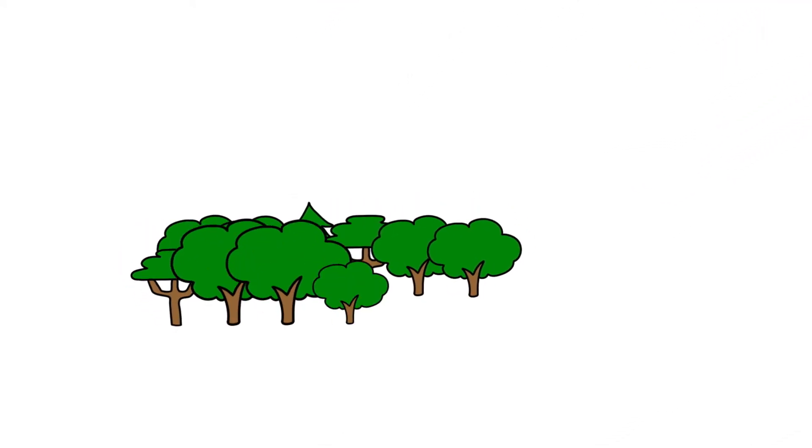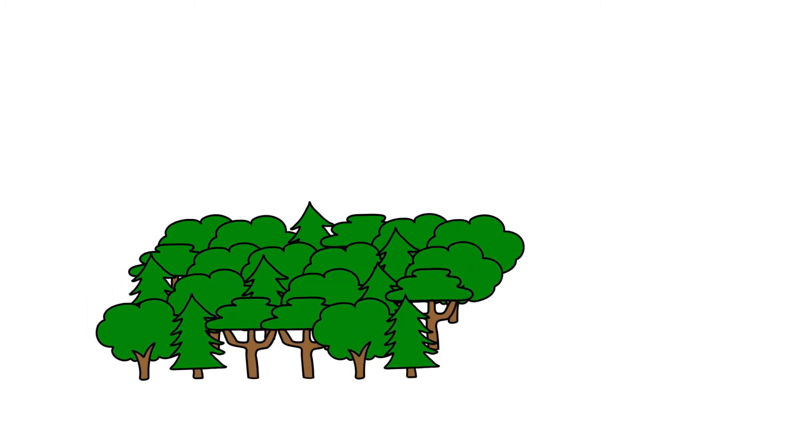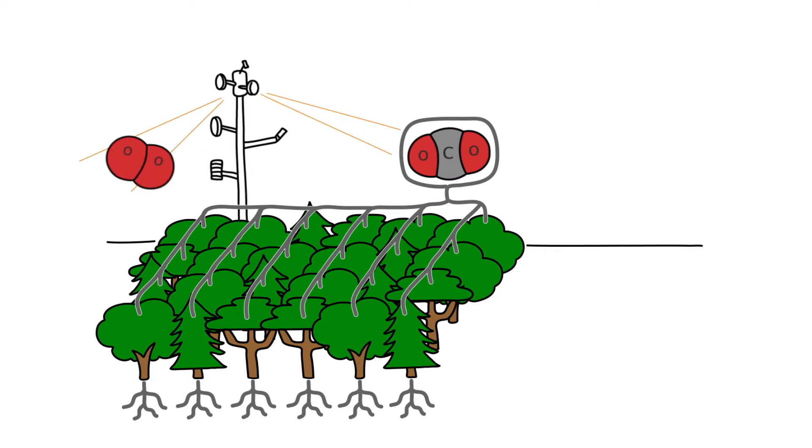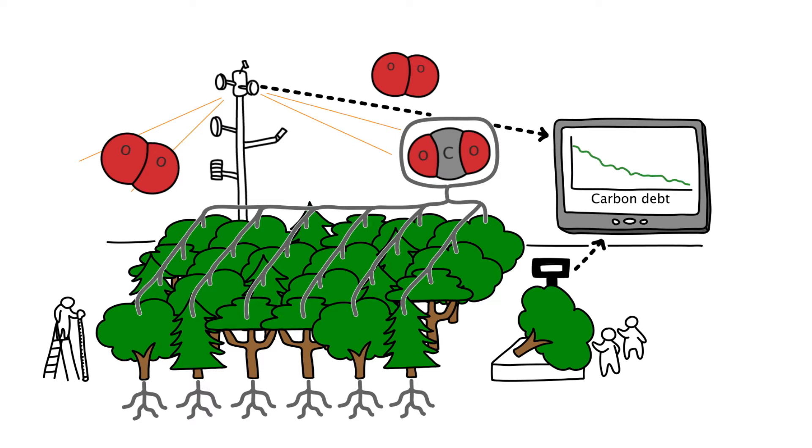1. Planting forests is a globally recognized and feasible way to reduce atmospheric carbon. Forests act as natural carbon sinks that capture CO2 from the atmosphere, and the results of carbon farming are measurable and verifiable.